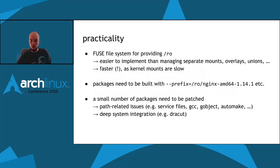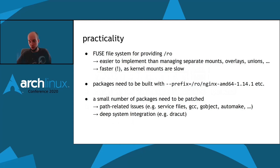You might wonder: these ideas sound nice in theory, but how practical are they? The biggest chunk of complexity is the /ro mount point in DISTRI. Instead of making the kernel manage separate mount points, overlays, unions, and other building blocks, we found it both easier and faster to implement our own FUSE filesystem that provides the /ro mount point. Aside from this, you only need to build your packages with the --prefix argument so that they know where they'll be installed. A small number of packages needs to be patched for path-related issues.